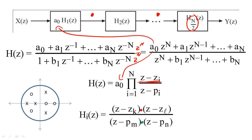So, z sub k and z sub l must be complex conjugates, and p sub m and p sub n must be complex conjugates for every set of complex poles and zeros.